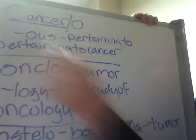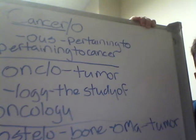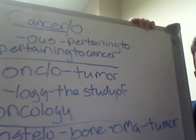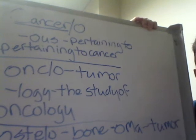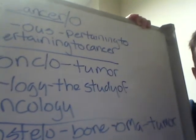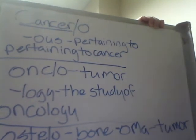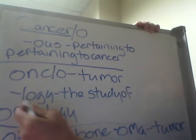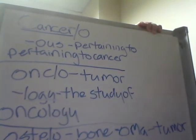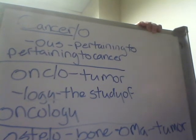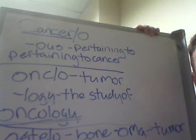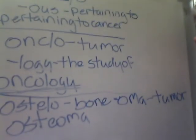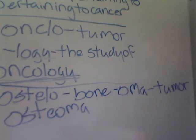Our first term is cancer itself. Cancero literally means cancer — this rampant, uncontrolled growth of cells. The suffix -ous means pertaining to, so cancerous means pertaining to cancer. Onco is another term you will see very often in medical terminology and in hospital jargon — onco means tumor. You will also see the suffix -logy, which means the study of. So your hospital may have a department of oncology, which is the study of tumors. We also have a suffix that gets used very often: -oma, O-M-A, which is a suffix that means tumor.